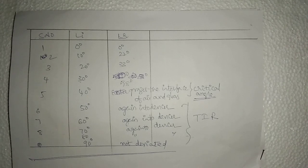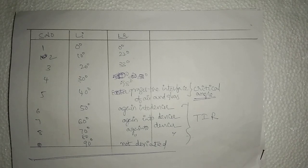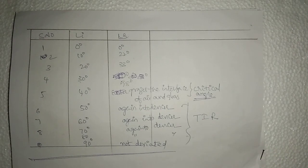The definition of total internal reflection: it is the phenomenon in which light enters from denser to rarer, and beyond the critical angle, light never enters into the rarer medium — it bounces back into the denser. This phenomenon is called total internal reflection. The definition of critical angle: whenever a light ray travels from denser to rarer, at a particular angle of incidence, the light ray grazes the interface of air and glass. That particular angle of incidence is called critical angle.